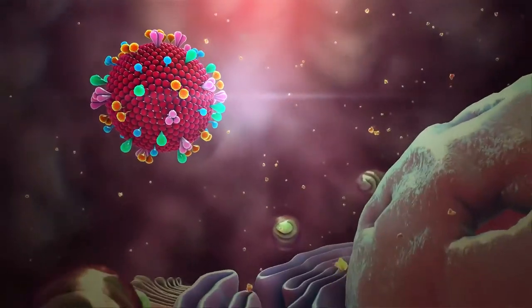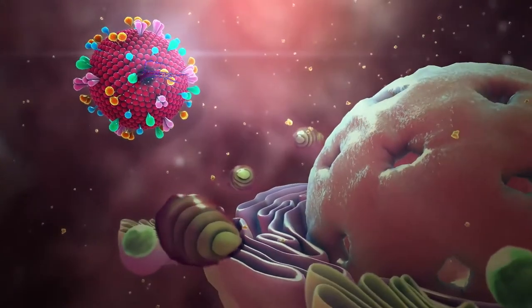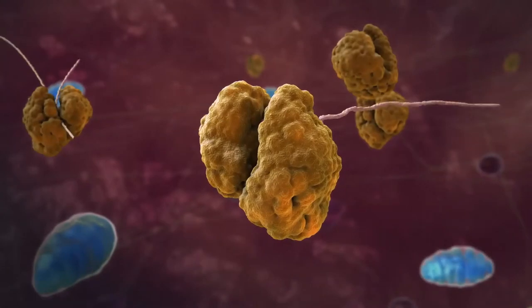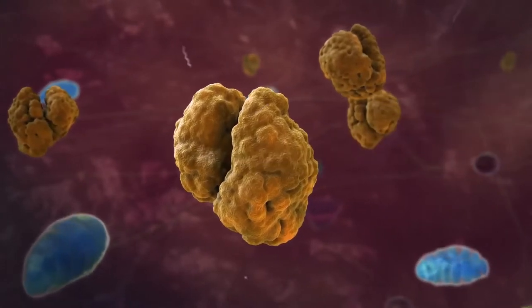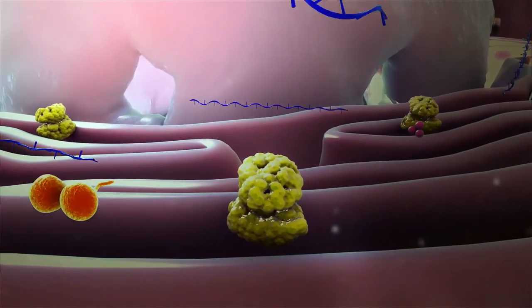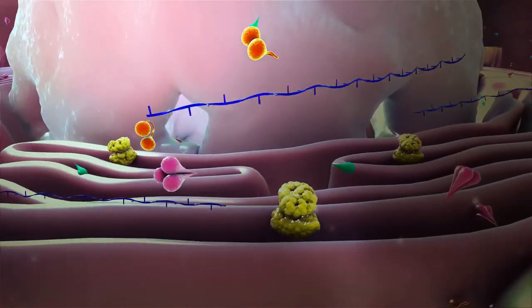Once inside the cytoplasm, the endosome opens to reveal the virus's genetic material, a single-stranded RNA. The virus hijacks the cell's machinery to replicate the RNA and end proteins, and uses the endoplasmic reticulum to form its M-protein outer layer, and the all-important S-protein.